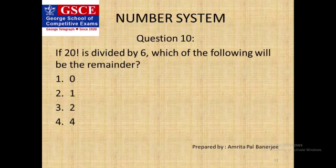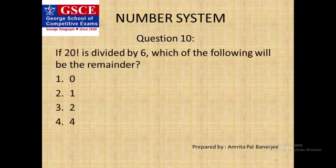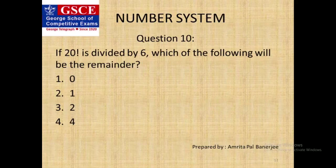Finally, the last question of the presentation — question 10: if 20 factorial is divided by 6, which of the following will be the remainder? Since 20 factorial contains both factors 2 and 3 (i.e., it is divisible by 6), there shouldn't be any remainder. So the correct option is option 1, which is 0.